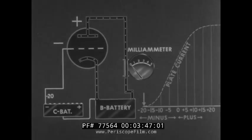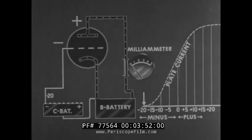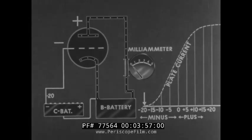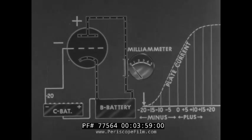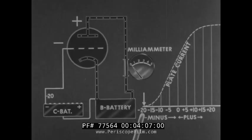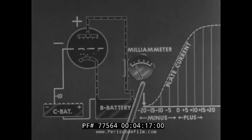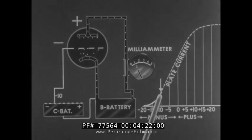We may chart the flow of plate current with changes in grid bias. The C battery is impressing minus 20 volts upon the grid. Both the milliamp meter and the chart represent no plate current flowing — a grid bias of minus 20 is the cutoff bias of this tube. Now if we change the grid bias to minus 10 volts, the milliamp meter indicates one unit of current flow in the plate circuit, and the arrow on the plate current graph moves up a corresponding distance.